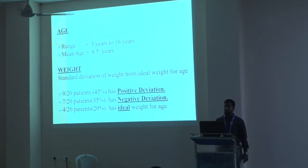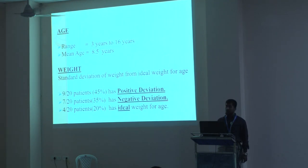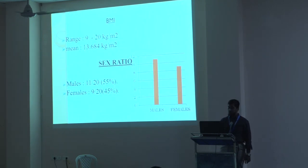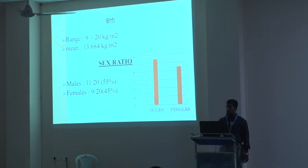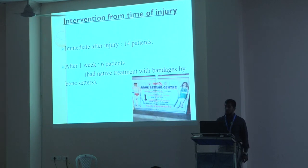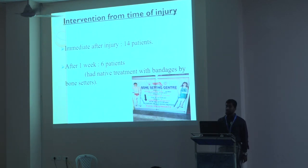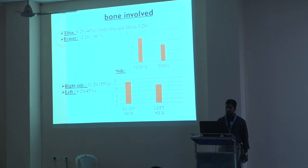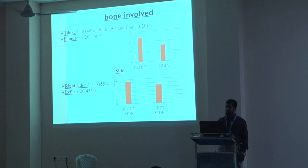Patient ages ranged from 3 to 16 years with a mean of 8.5 years. 45% of patients had positive deviation for weight-for-age, 35% had negative deviation, and 20% had ideal weight-for-age. BMI ranged from 9 to 20 kg/m² with a mean of 13.6. Male patients comprised 65% and female patients 45%. 14 patients reported to an orthopedic surgeon immediately after injury; 6 patients had native treatment with bone setters and reported late. 40% were tibia fractures and 60% were femur fractures; 55% were right-sided and 45% left-sided.